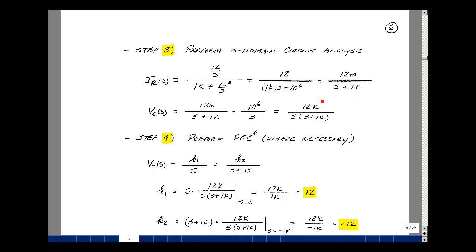The current through the resistor is actually in the form of our table. But the capacitor voltage, we have a denominator with two terms, S times S plus 1k, so we could write that as some K1 over S plus K2 over S plus 1k.